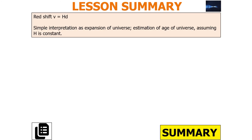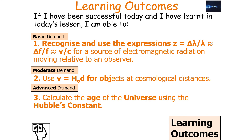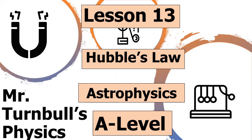So to summarise: V equals HD gives a simple interpretation of the expansion of the universe and an estimation of the age of the universe, assuming H is constant. If we've been successful in today's lesson, we should be able to recognise and use the expression z equals Δλ over λ equals Δf over f equals v over c, use V equals H times D for objects at cosmological distances, and calculate the age of the universe using Hubble's constant. I hope you've enjoyed today's lesson on Hubble's Law — thank you very much for watching.